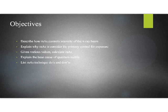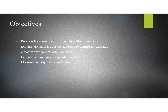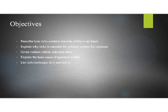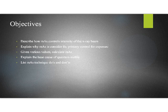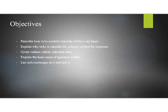Here's some learning objectives for us. First, I want to be able to describe how mAs controls the intensity of the x-ray beam. Second, I want to be able to explain why mAs is considered the primary control for exposure. Given various values, calculate mAs. Explain the basic cause of quantum mottle, which is primarily controlled by mAs. And list mAs techniques, do's and don'ts. What does mAs do? What doesn't mAs do? What are the factors it controls? What are the things it doesn't control?